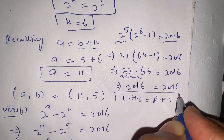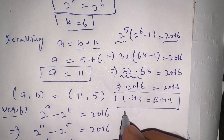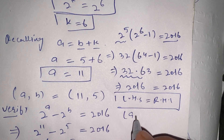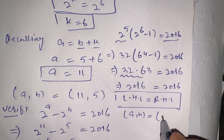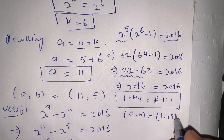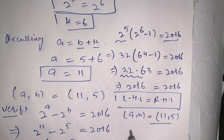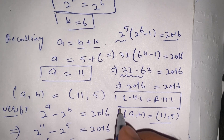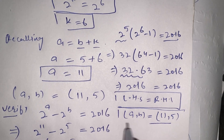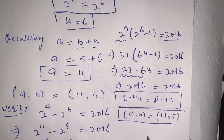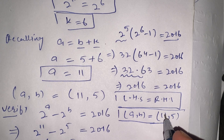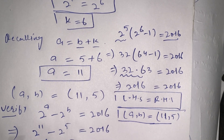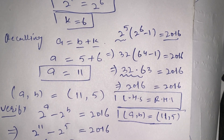So the pair (a, b) equals (11, 5) satisfies our given equation. If you are new here, make sure you subscribe to our channel for more informative videos. See you in the next video — till then, bye.